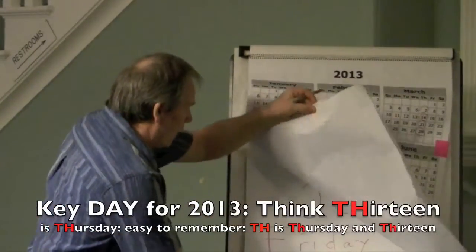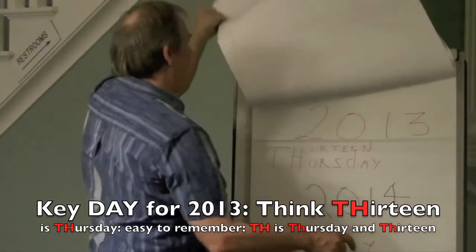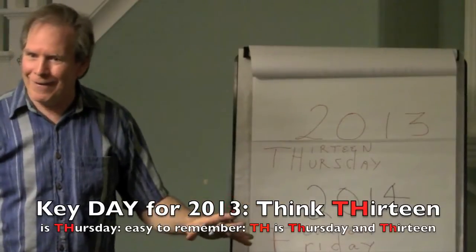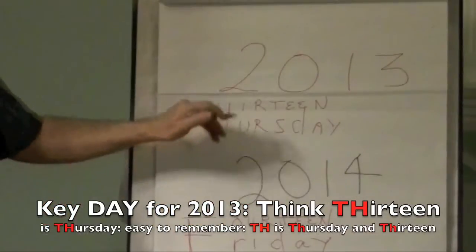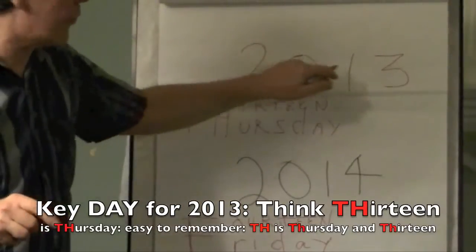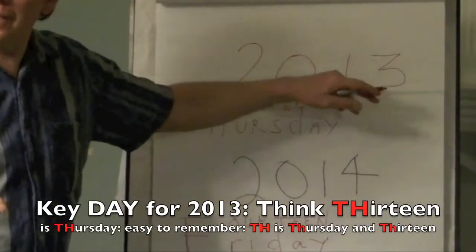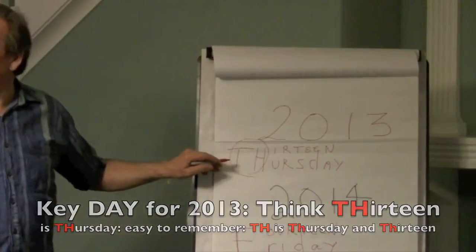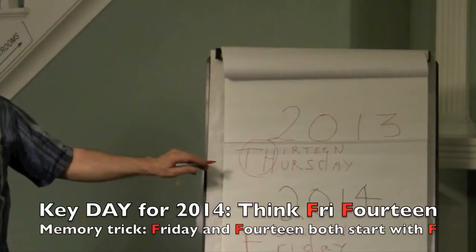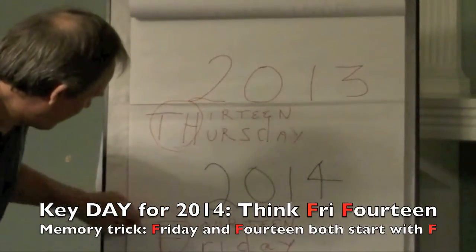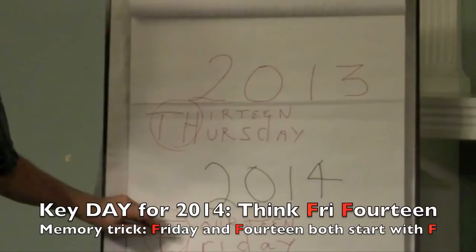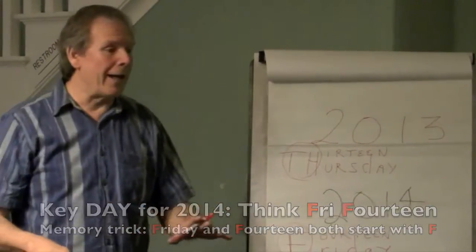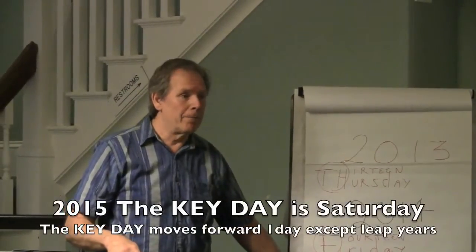The other thing I didn't show you is that all the days change year to year — the key date shifts. All those dates are on Thursday this year. In 2013, the year ends in 13, TH — Thursday. In 2014, it starts with F — so all those dates are on Friday. In 2015, it moves to Saturday.